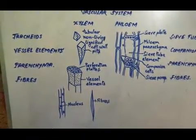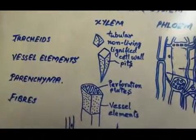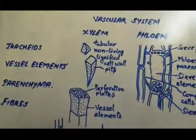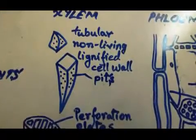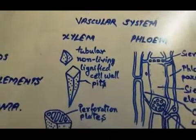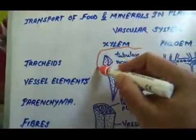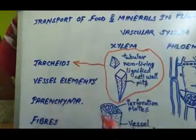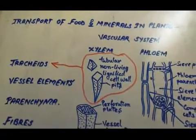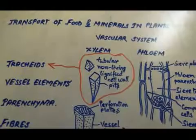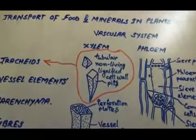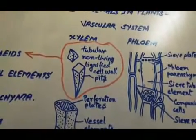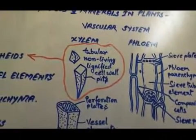The xylem is composed of the tracheids, the vessel elements, the parenchyma and the fibers. The tracheids — as you can see in this diagram — are long, thin, dead cells that are connected together at the tapered ends. Their cell wall contains lignin which provides structural support to the xylem.